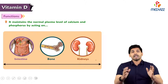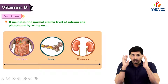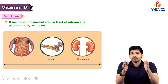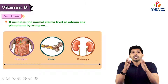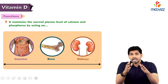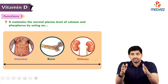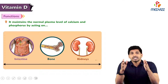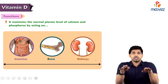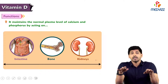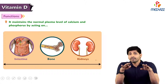Just as vitamin A is associated with healthy vision, whenever you think about vitamin D, keep in mind that vitamin D maintains bone metabolism. This means bones are made up of calcium, so indirectly vitamin D maintains calcium homeostasis — keeping your calcium levels stable by working on three different organs.